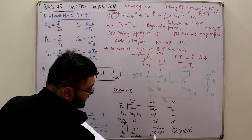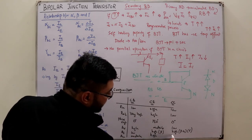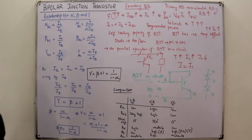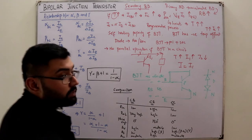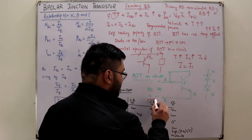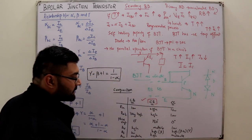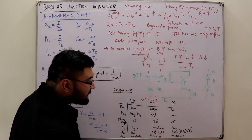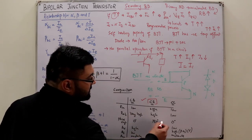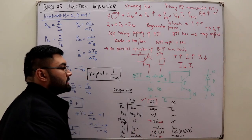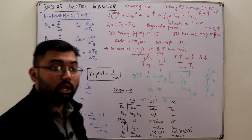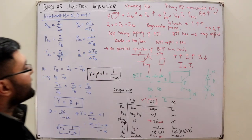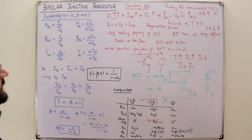Power gain is moderate for common base, high for common emitter, and moderate for common collector. The most practical configuration is common emitter due to its high power gain — used in power amplifiers — and most importantly its 180° phase shift, making it useful as an inverting amplifier.